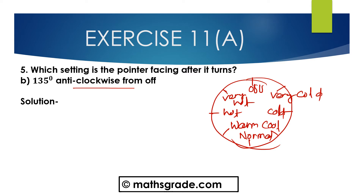Which setting is the counter facing after it turns 135 degrees anti-clockwise from off? From off — each pointer represents 45 degrees. So this is 45 degrees, this is 45 degrees, and this is 45 degrees. 45 plus 45 is 90, and 90 plus 45 is 135 degrees. So from off, moving anti-clockwise: off to very cold is 45 degrees, very cold to hot — from very hot to hot is 45 degrees, and hot to warm is 45 degrees. So the pointer points to warm.